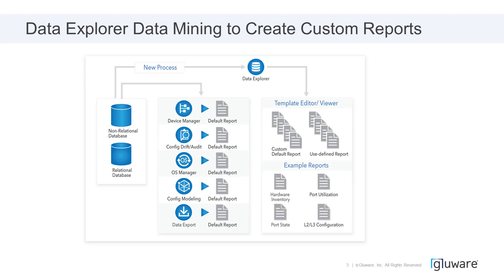Glueware provided data that was very app-oriented depending on what part of the platform you're using. In this new process, you can navigate into Data Explorer directly and then either choose a pre-built report or navigate into the template editor and create your own user-defined report, defining the fields exactly how you want to see them. For example, you might want information from Device Manager fields like hostname, discovered serial number, and OS version, plus drift status and whether an OS upgrade passed or failed — all in one report. That type of mixed data report wasn't really available before.